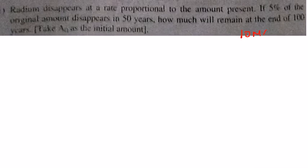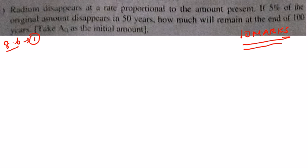This is also a 10-mark sum. This is Exercise 8.6, and this is the first sum in that. The print is not very clear here, so let me read it out. Radium is disappearing at a rate proportional to the amount present.